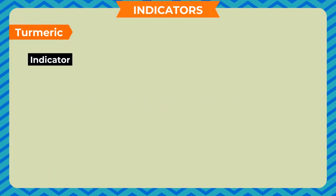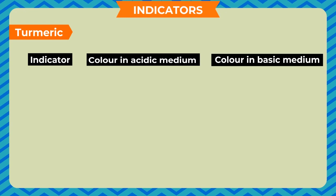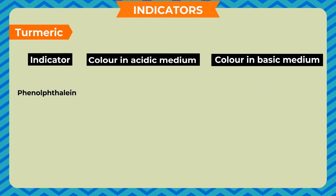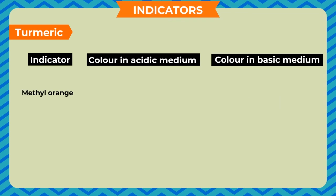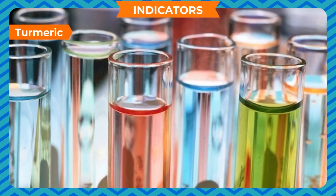Indicators and change in medium — Litmus: turns blue to red in acidic medium, red to blue in basic medium. Phenolphthalein: remains colorless in acidic medium, turns pink in basic medium. Methyl orange: remains orange in acidic medium, turns yellow in basic medium. Substances which do not show any change in color with indicators are neutral.